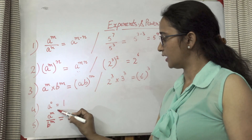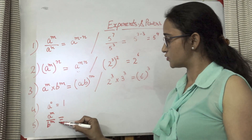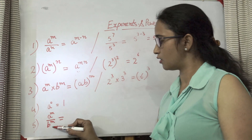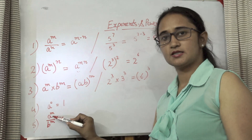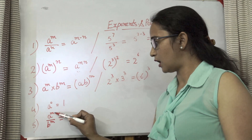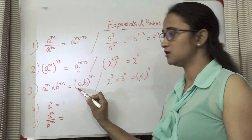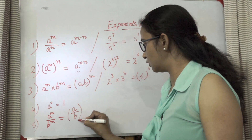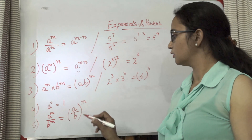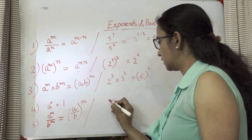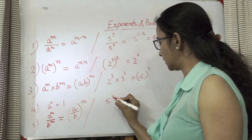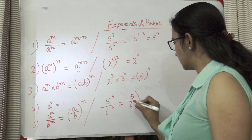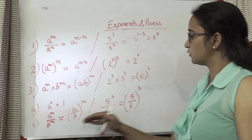The 5th law is a raised to the power m upon b raised to the power m. In the 1st law division had the same base, but in the 5th law the base is different — numerator has base a and denominator has base b — and the power is the same. Just as in multiplication we multiplied the bases and took the power common, here we do a by b whole raised to the power m. For example, 5 raised to the power 3 upon 6 raised to the power 3 becomes 5/6 whole raised to the power 3. This is how we solve the 5th law.